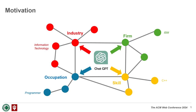We expect that ChatGPT has a huge impact on the labor market. These impacts do not localize to a single unit, but spread to skills, occupations, firms, and industry. This is why we need a holistic approach covering heterogeneous labor market units.